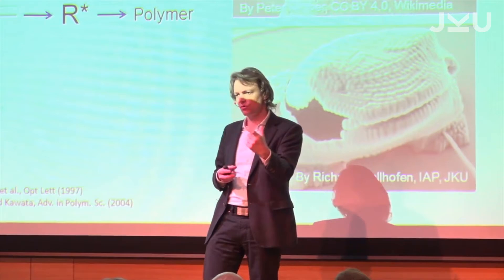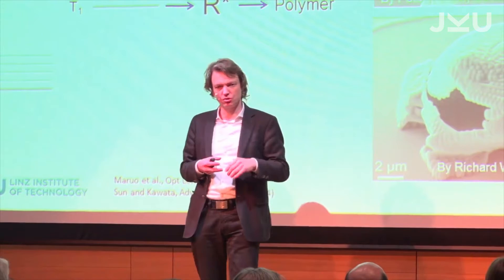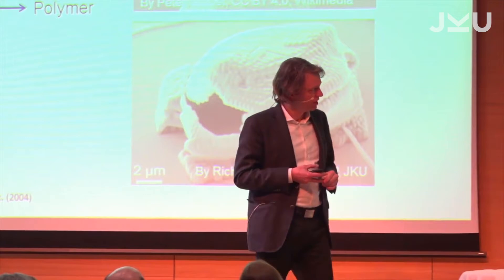On the upper right-hand side, you see a castle, and the castle is 300 times 300 times 300 microns in size. So this is three-dimensional micropatterning using light, focusing it into the polymer — two-photon absorption.